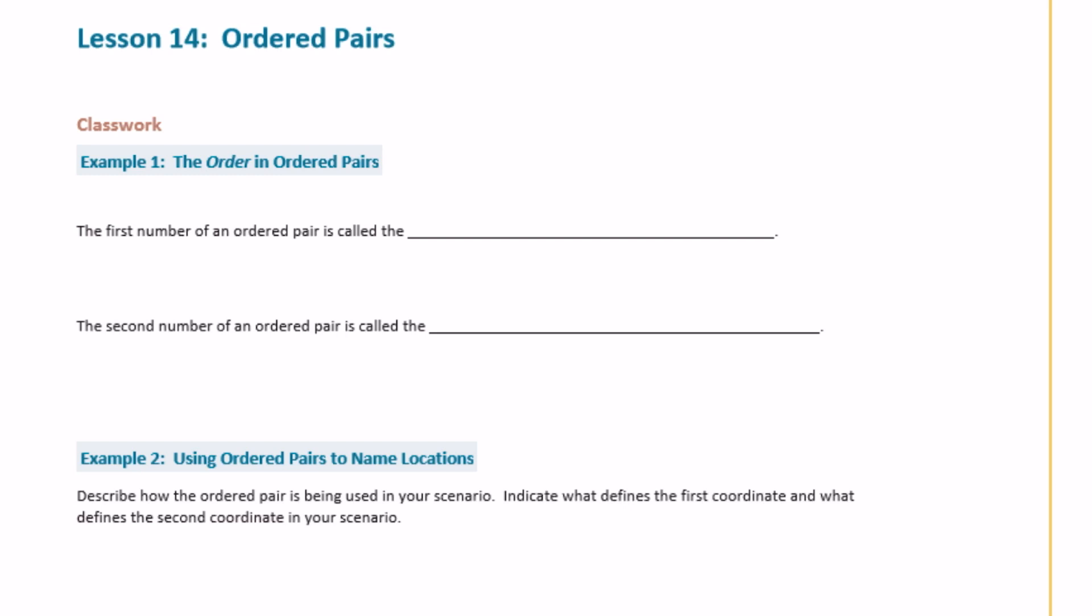Let's just go over what we remember from ordered pairs. So an ordered pair is something like 4, 2, and then we would plot it on our coordinate grid. The first number in an ordered pair is called the first coordinate. So 4 would be called the first coordinate.